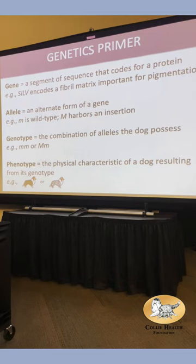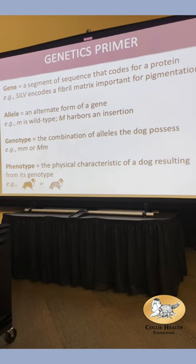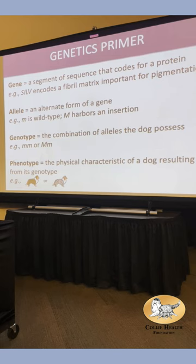An allele is an alternate form of a gene. We all have the same genes — we all have two copies, one from mom, one from dad — but we don't all have the same versions. There are slight variations. These are alleles.